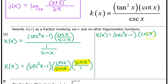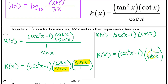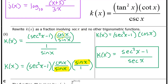Now we have this expression. Since secant x is the reciprocal of cosine, cosine x is also the reciprocal of secant x. So let's replace cosine x with 1 over secant x. Multiplying by 1 over secant x is the same as putting secant x in the denominator. And that's it — we have rewritten k of x as a fraction involving secant x and no other trig functions.